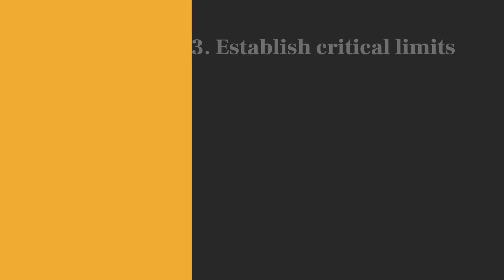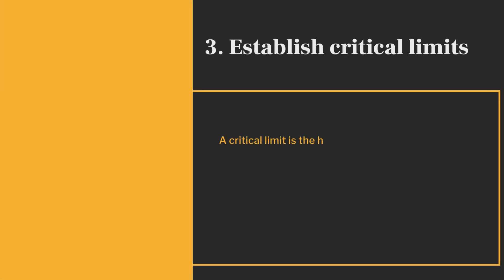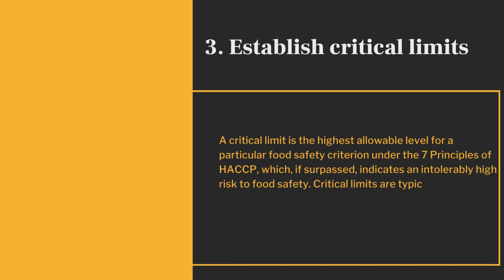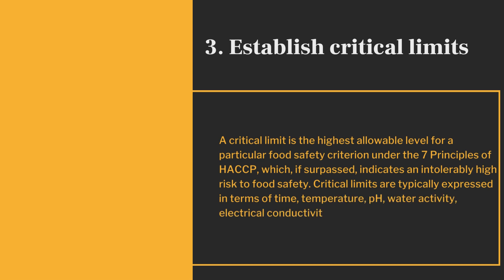A critical limit is the highest allowable level for a particular food safety criterion under the seven principles of HACCP, which, if surpassed, indicates an intolerably high risk to food safety. Critical limits are typically expressed in terms of time, temperature, pH, water activity, electrical conductivity, and other characteristics.